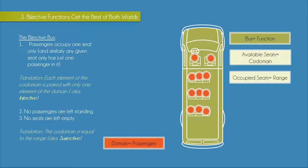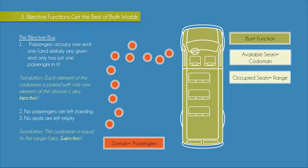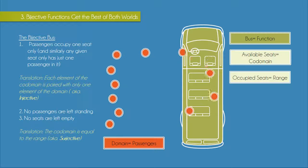The seats that actually get filled is the range. If the assigning of seats is to be a bijective function, the bus must be filled in a particular way, as you can see in this animation.